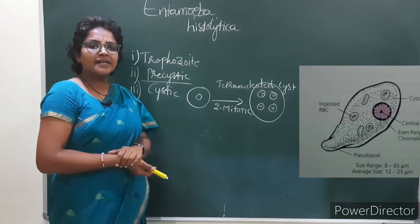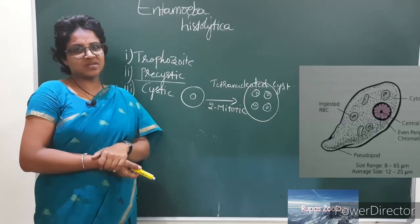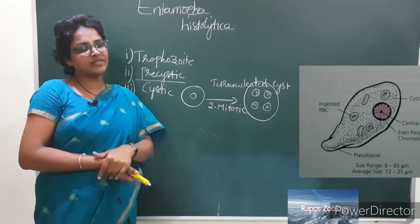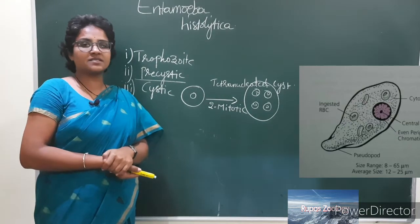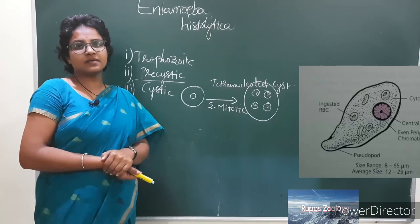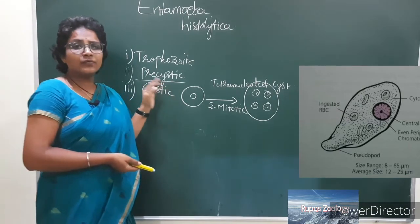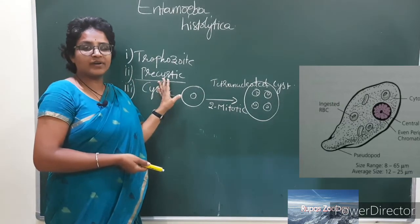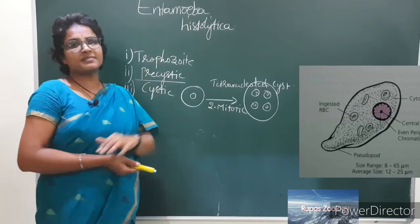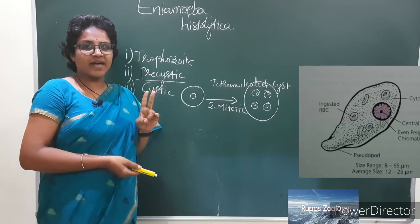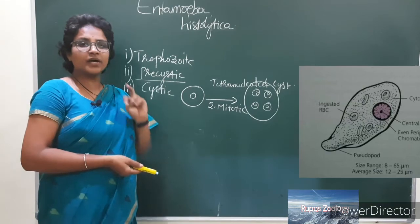Today we are going to discuss Entamoeba histolytica, which belongs to the protozoa parasites. We are now entering into the sixth chapter on life cycles. We have already discussed parasitic adaptations, effects of parasites on hosts, different types of parasites, hosts and vectors. Now we are entering into the life cycles of different parasites. The first parasite is Entamoeba histolytica, followed by Plasmodium vivax, Ascaris lumbricoides, and Wuchereria bancrofti — these four life cycles we are going to study.